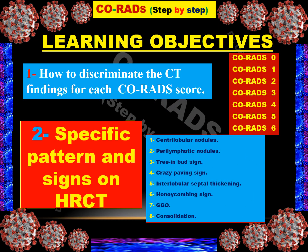The learning objectives from this presentation are: first, how to discriminate CT findings for each CO-RADS score from 0 to 6, and what are the most important specific signs and patterns in each HRCT which can be used for these classifications — like centrilobular nodules, perilymphatic nodules, tree-in-bud signs, crazy-paving signs, interlobular septal thickening, honeycombing, ground glass opacity, and consolidation. This lesson is going to be short and sweet but we will get to the bottom of this.